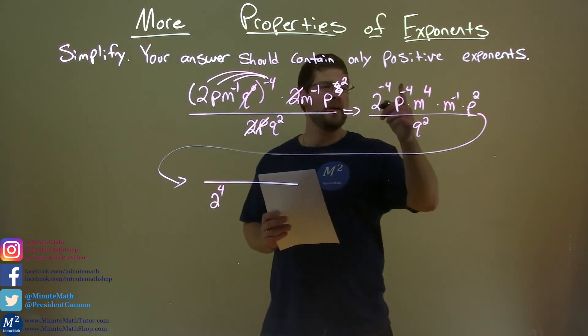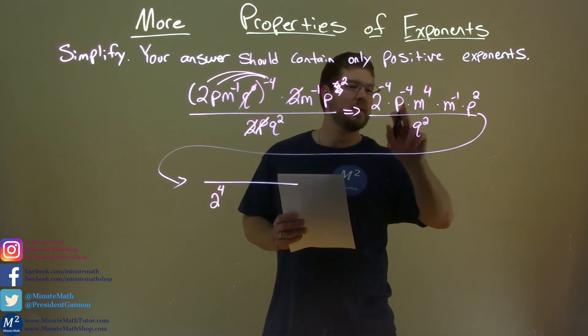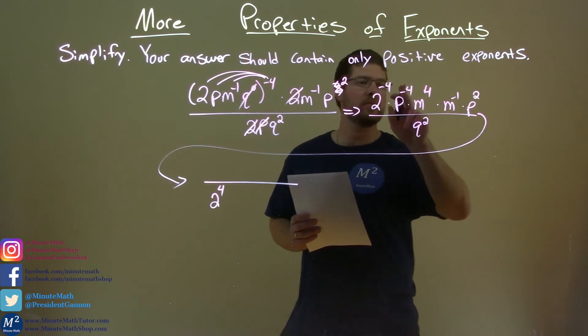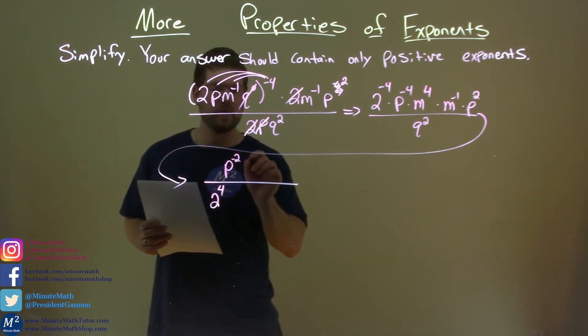Now our p's. We have p to the negative 4th times p squared. We add the exponents, right? We have the same p's, same base. We add the exponents. Negative 4 plus 2 is a negative 2. So we have p to the negative 2 in the numerator here.